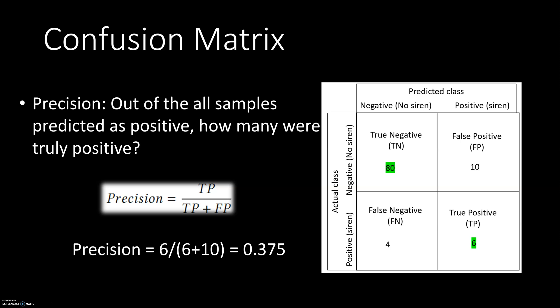The next measure is precision. The question here is: out of all the samples predicted as positive, how many were truly positive? Out of all samples predicted positive, only 6 were truly positive, giving us a precision of 0.375, which is quite low.